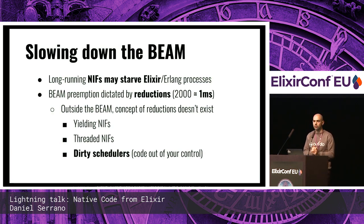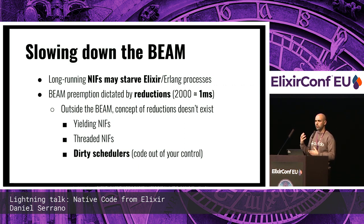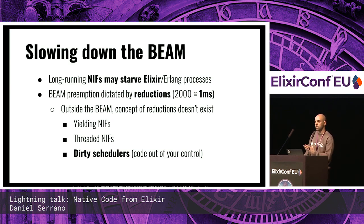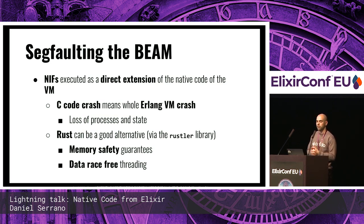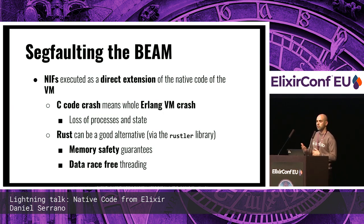This approach has some problems. Slowing down the BEAM is one of them — NIFs may starve Elixir. The BEAM works with reductions, usually 2,000 per process, after which it yields processing to another process. Dirty schedulers are used for this, running the code in a separate scheduler from the default one. You can also segfault the BEAM — if your C code crashes, you lose all processes and state. To work around this, you can use Rust with the Rustler library, which provides memory safety guarantees and data-race-free threading.